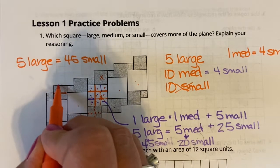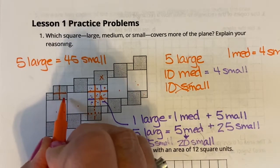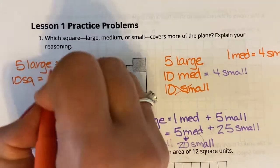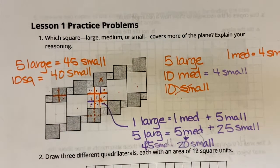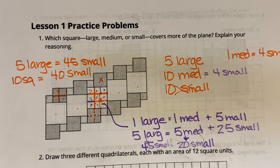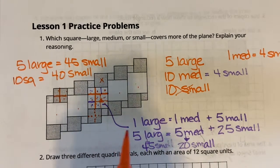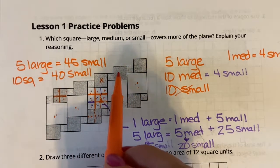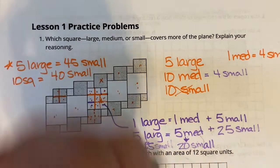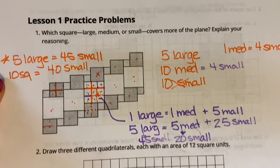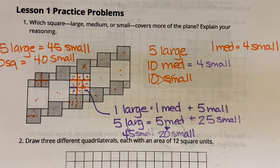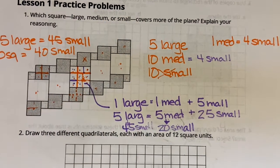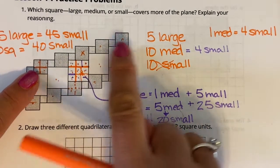So it looks like the large squares take up more area than the medium squares. Five large would make 45 small squares; ten medium would make 40 small squares. So even though I had more medium squares in count, the five large squares took up the most area. What I did was make them all small squares and figure out which one took up the most space — my large wins.